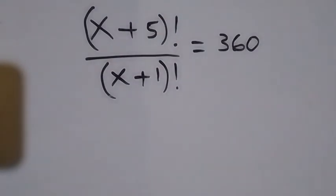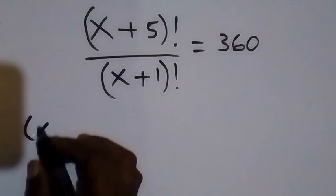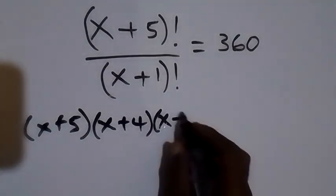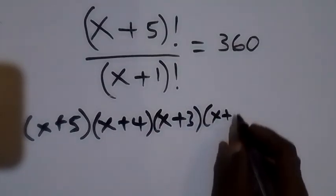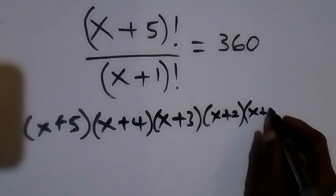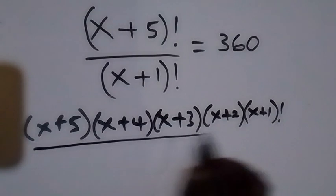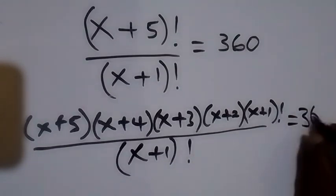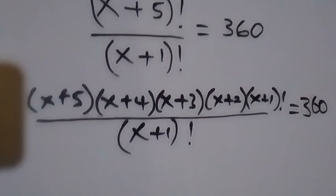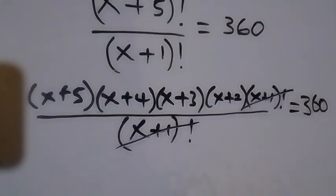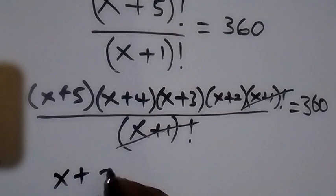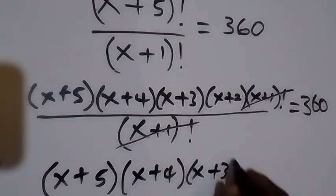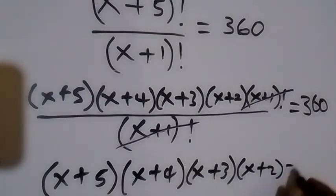From here, (x+5)! can be written as (x+5)(x+4)(x+3)(x+2)(x+1)!, then divided by (x+1)!, which equals 360. The (x+1)! terms cancel each other, and we are left with (x+5)(x+4)(x+3)(x+2) = 360.